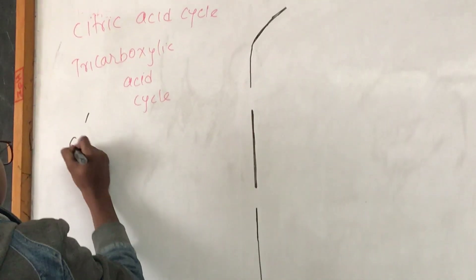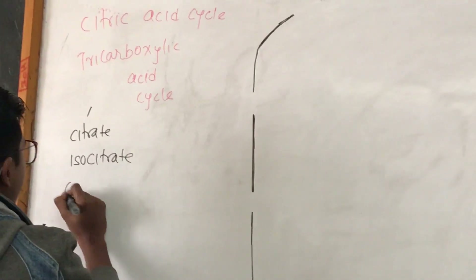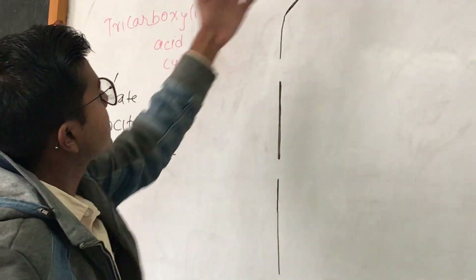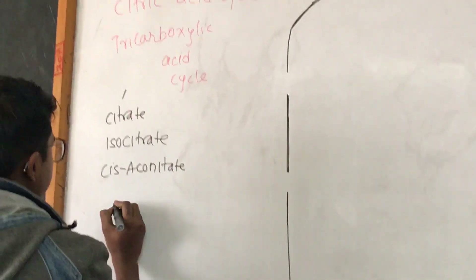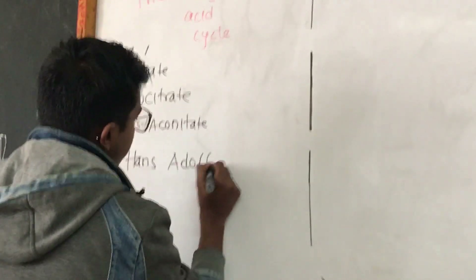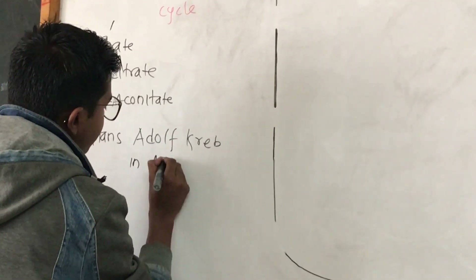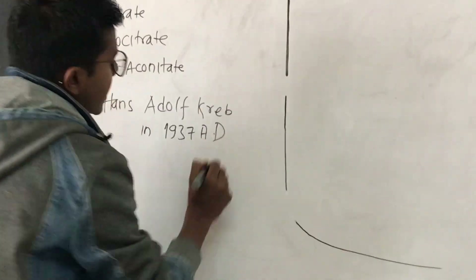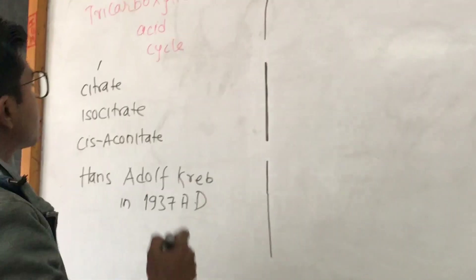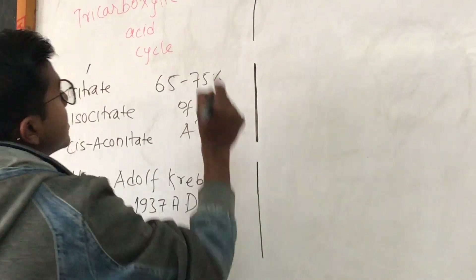The three carboxylic acids involved are citrate, isocitrate, and cis-aconitate. This cycle is named in honor of scientist Hans Adolf Krebs, who described this cycle in 1937 AD. It is the major pathway for energy production — that's why 60 to 75 percent of total ATP is produced by this process.